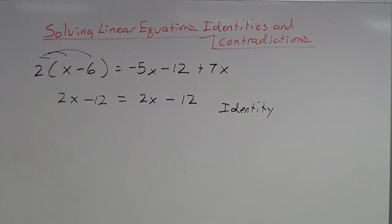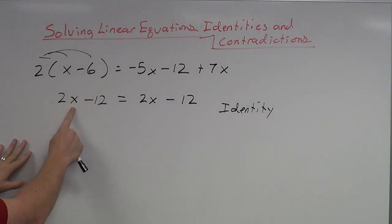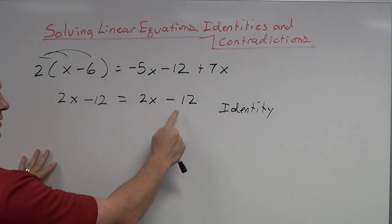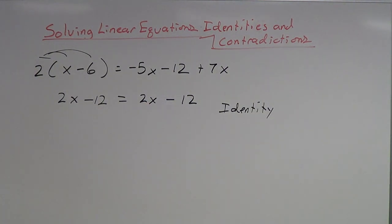If everything on the left side and everything on the right side happens to be the same, this is what we call an identity. What it means is that any value of the variable is going to work. I can plug in the number 5: 2 times 5 is 10, 10 minus 12 is negative 2. On the right side, 2 times 5 is 10, 10 minus 12 is negative 2. Negative 2 equals negative 2 — it works. I can plug in whatever number I want and it's always going to work. That's kind of the definition of identity. Not all students are going to see this right away — you're just going to want to keep solving.